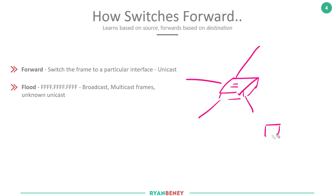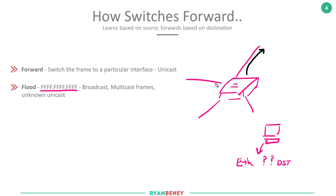The next option is to flood the traffic. If a PC creates a frame but doesn't know the destination, it can populate the destination field with the all-F's broadcast address. When the switch sees all-F's in the destination field, it sends the traffic out of all interfaces except the one it was received on. This is called flooding, and the switch does this to learn where hosts are in the network.